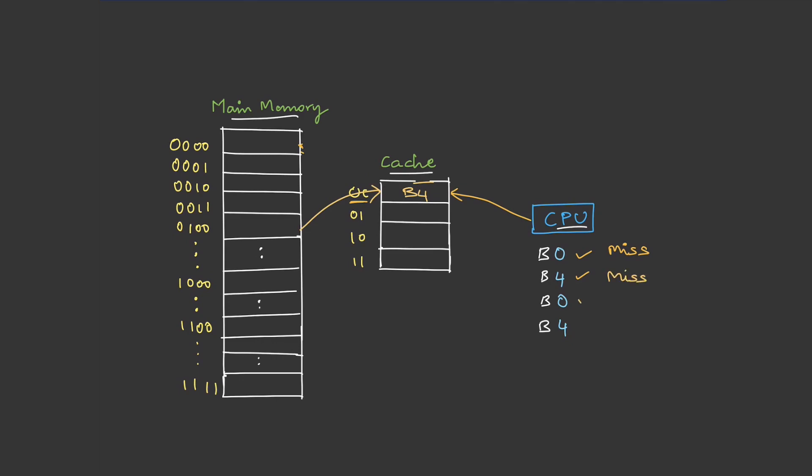Next, the request is B0, but here we see it is block 4, so again this has to be removed. Now we need to copy the block 0 to here. So again, this is a miss. Next is B4. Again, this is B0, so this will be copied. This will become B4. So this is also a miss.